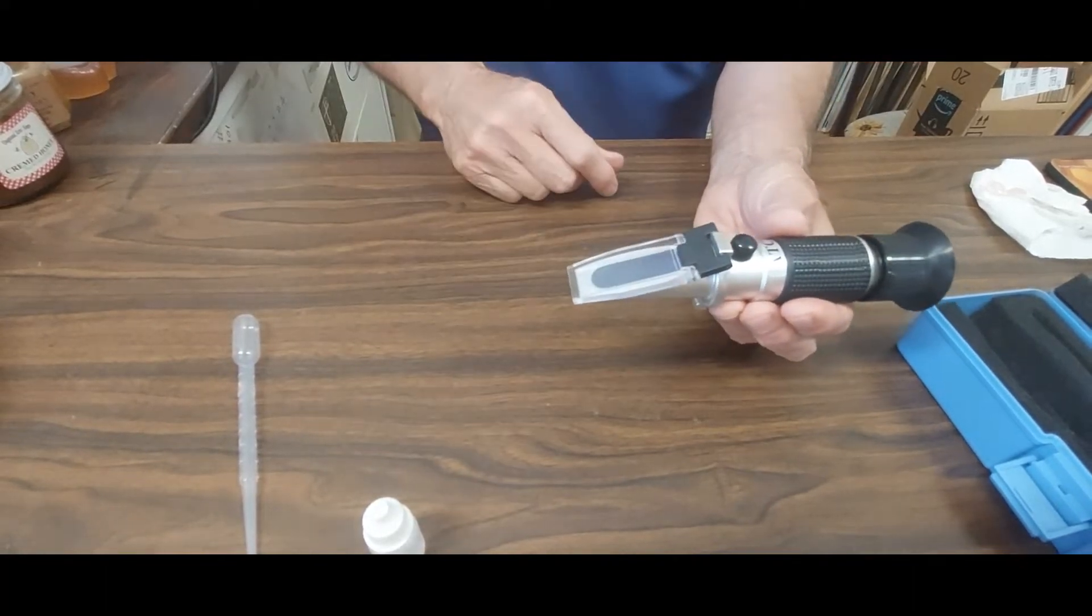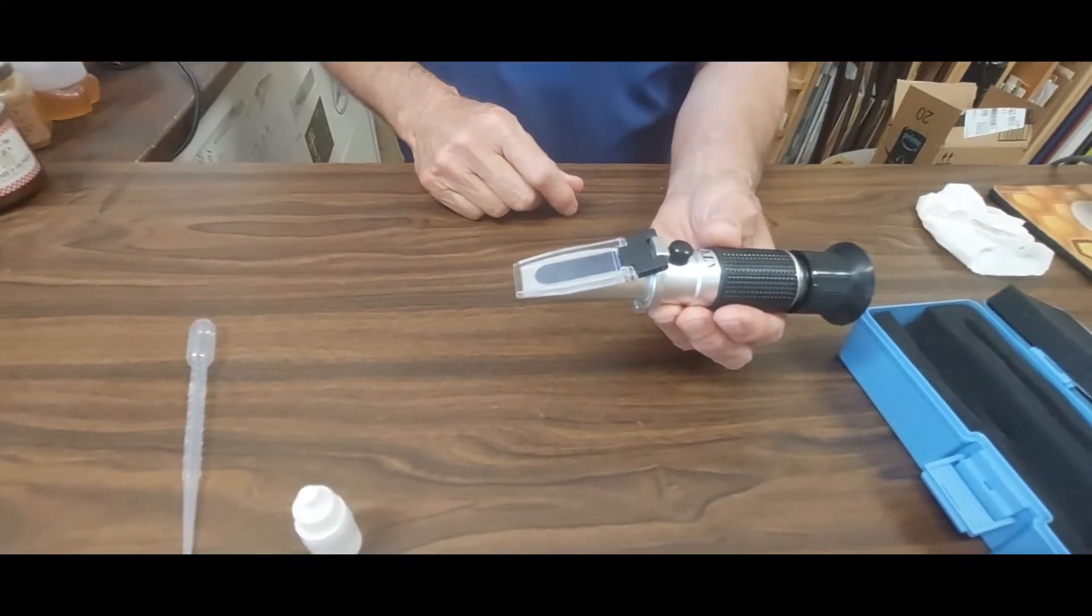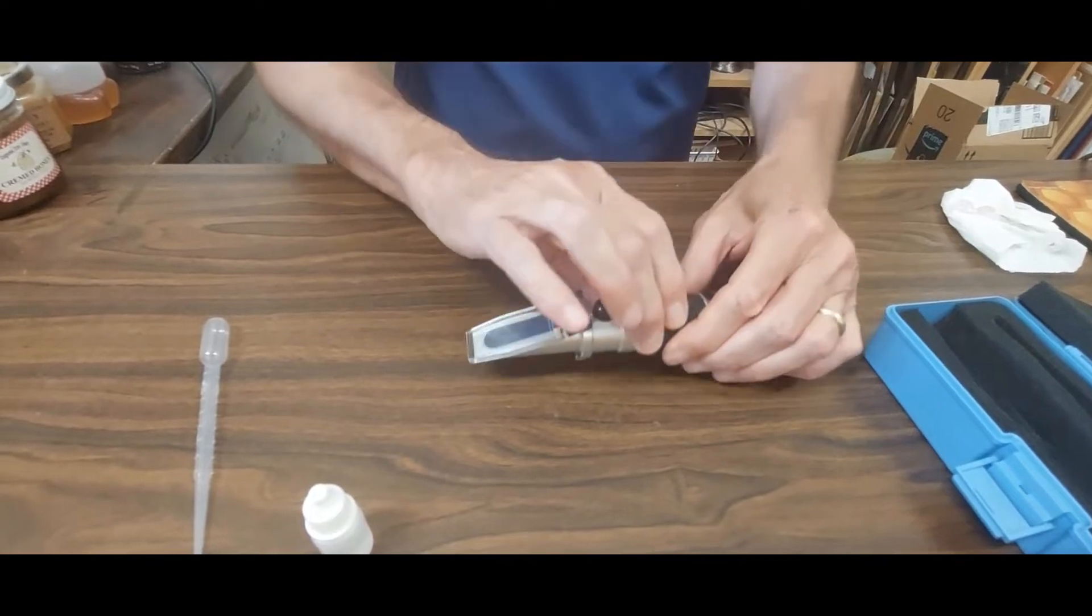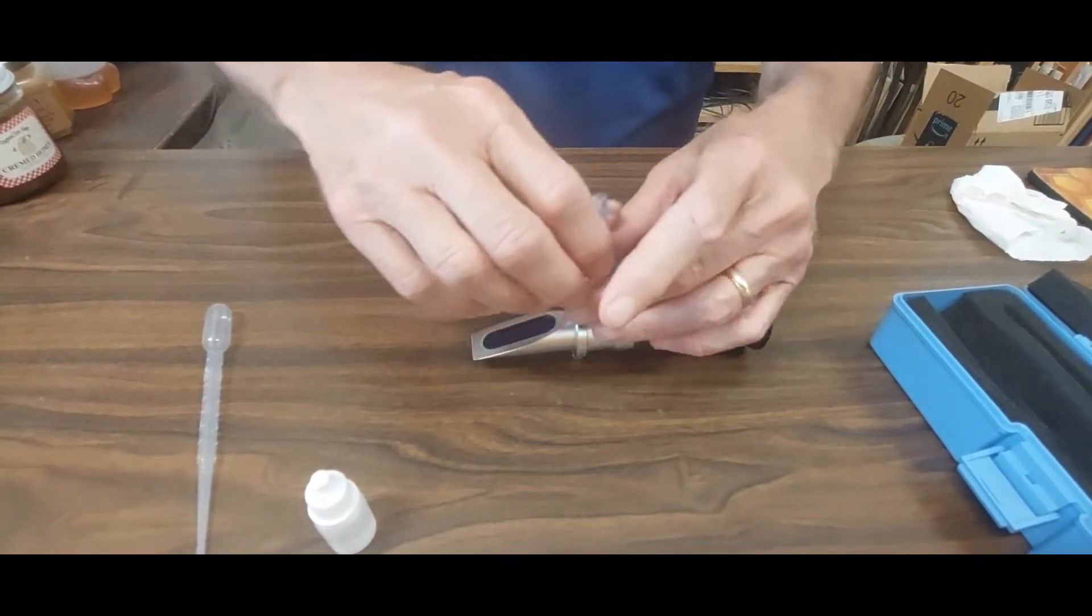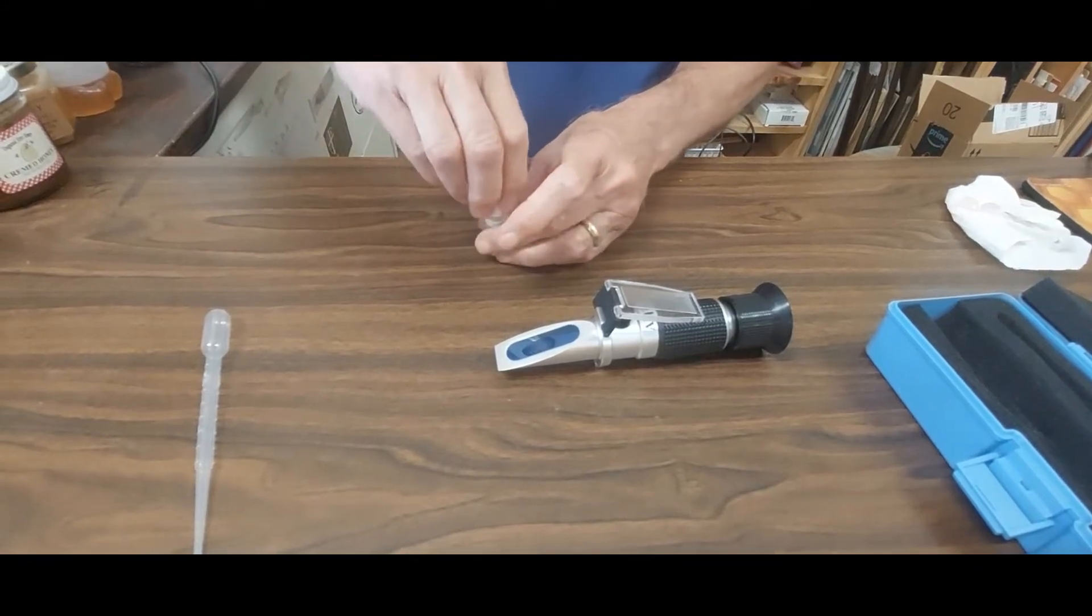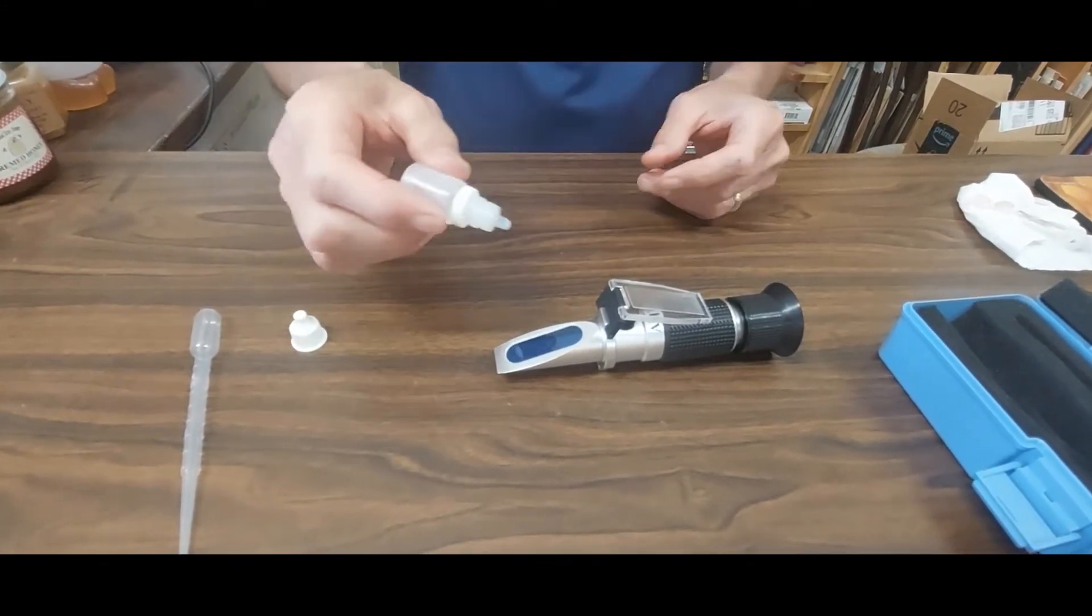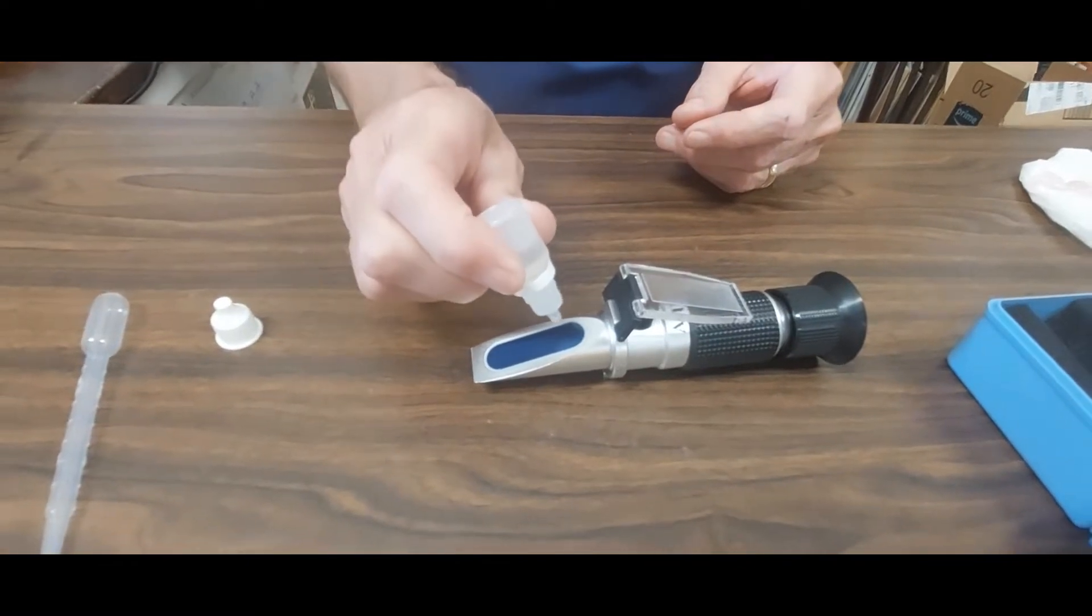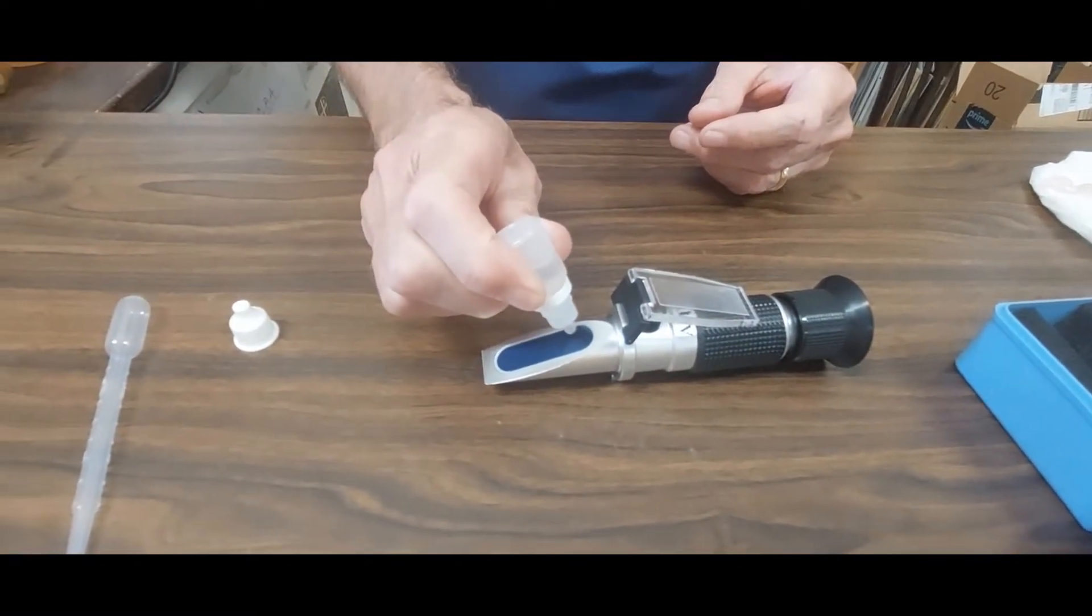Just enough to where when you close the cover it will completely fill that space. So first I want to calibrate it, so I'm going to put some calibration oil on it. So I'll set it down. I'll bring the lid back.